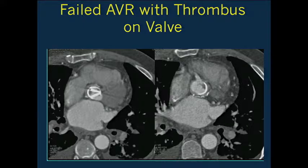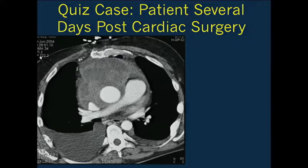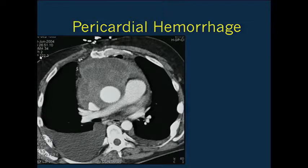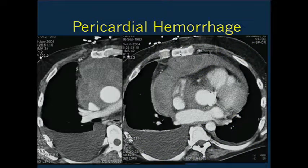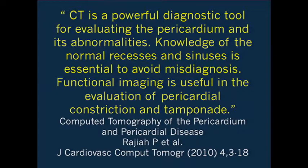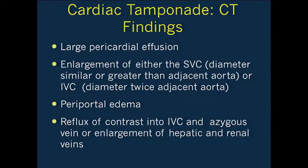A simple case: a patient several days post-op with chest pain and fever, with the thought being mediastinitis. You can see a large collection in the pericardium and also the mediastinum—classically high density, a good example of pericardial hemorrhage. This is often a later complication, though it can occur in the post-op period. Patients on Coumadin are one of the potential risk factors. CT is very good at looking at the pericardium in both native and post-surgical patients. This patient was developing cardiac tamponade—look for large pericardial effusions, enlargement of the SVC or IVC, periportal edema, or reflux of contrast.